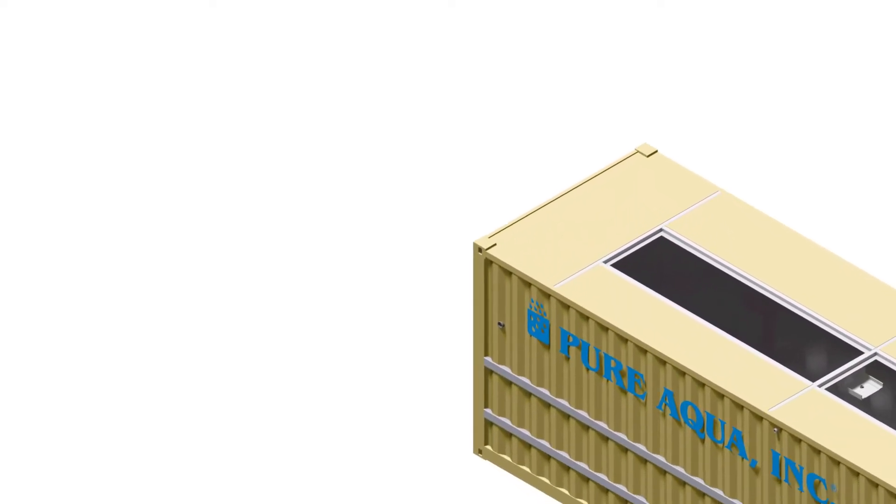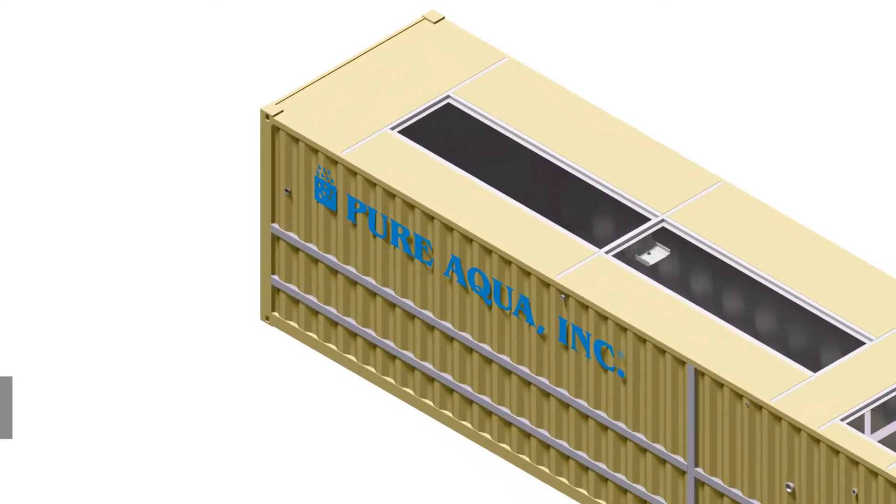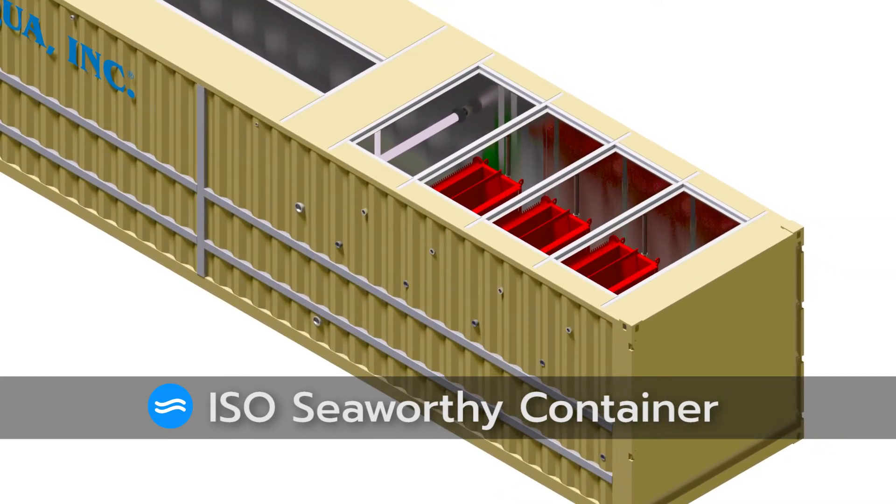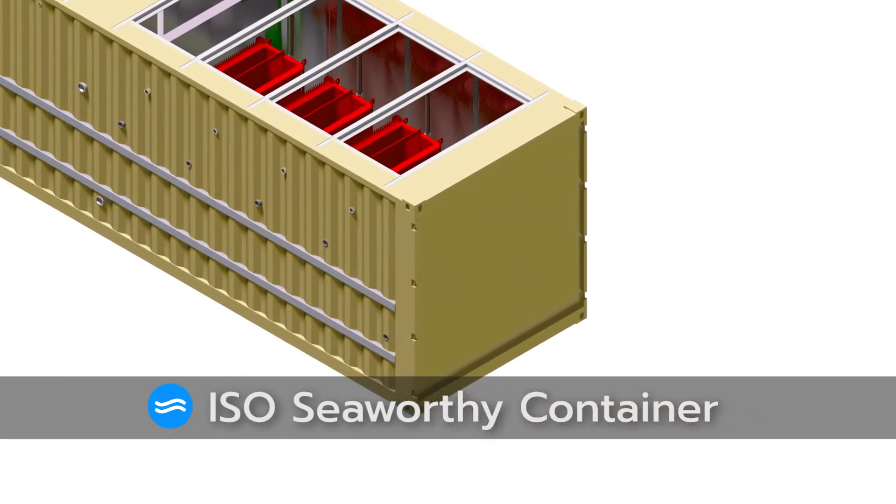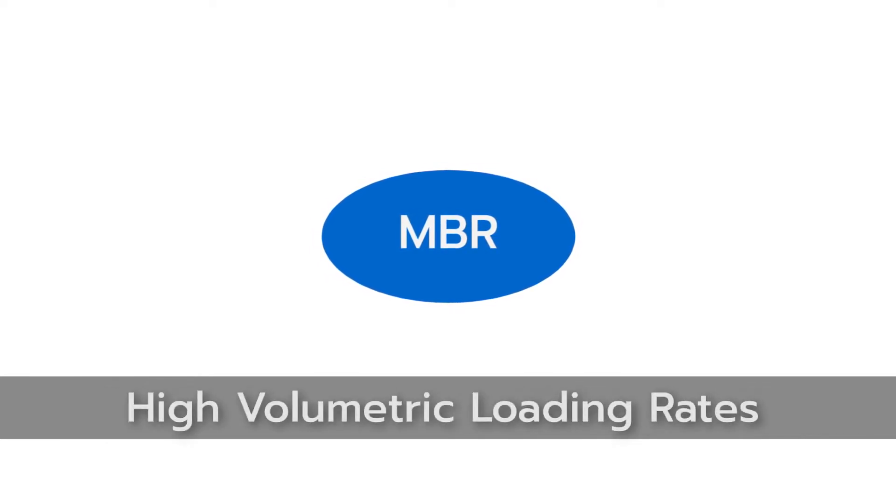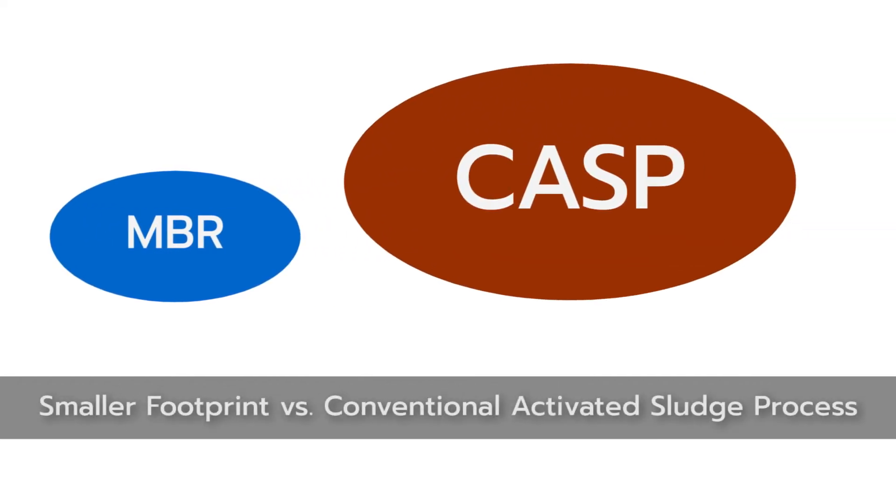One of the unique features about MBRC systems is that the whole process is inside a container which makes it really easily transferable to the location of interest either through sea or via ground. Our containerized MBRC systems operate at higher mixed liquor suspended solids concentration and volumetric loading rates and because of that they have extremely compact footprint compared to conventional activated sludge processes.